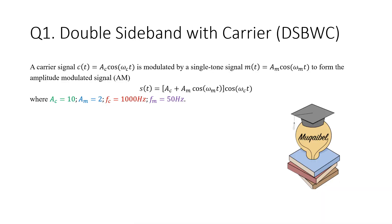We have one question. The carrier signal is given as cosine(ω_c · t) and is modulated by a single-tone message signal given by A times cosine(ω_m · t) to form an amplitude modulated signal. The full AM signal expression is: (A_c + A_m · cos(ω_m · t)) · cos(ω_c · t). We are told the carrier amplitude A_c equals 10 and the message amplitude A_m equals 2.